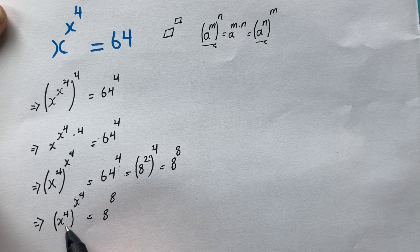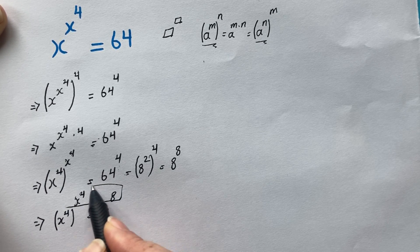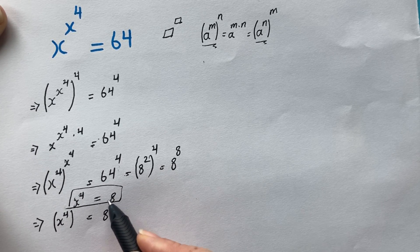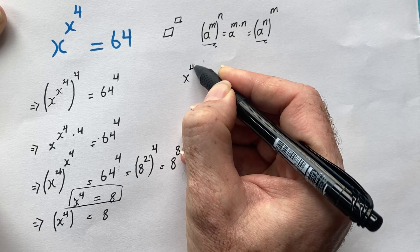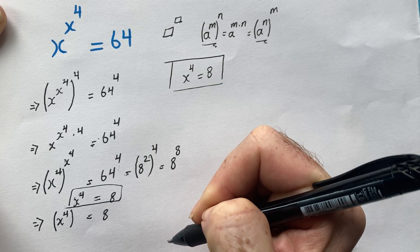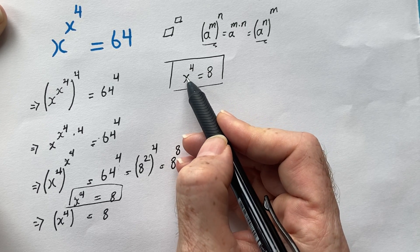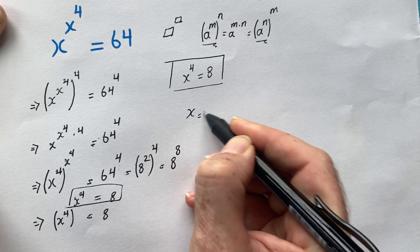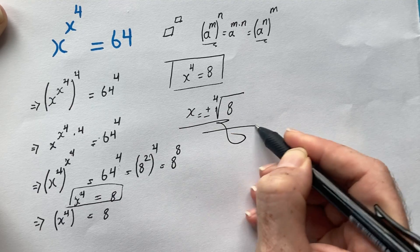Now on the left we have x to the power of 4, raised to the power of x to the power of 4, and on the right we have 8 to the power of 8 — both sides have the same base and exponent. So we can equate them: x to the power of 4 equals 8. This is easy! When x to the power of 4 equals 8, x equals plus or minus the fourth root of 8, and that is our answer.